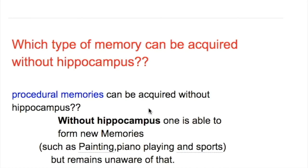Which type of memory can be acquired without the hippocampus? Procedural memories can be acquired without the hippocampus. Without the hippocampus, one is able to form new memories such as piano playing, painting, and sports, but remains unaware of that.